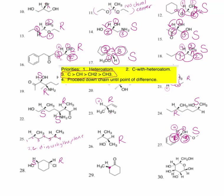For the third asymmetric center of number twenty-eight: hydrogen is number four. This is a carbon with no hydrogens, and this one has two of them. So we say this side is priority number one, two on the other side, and three is the methyl group. We rotate clockwise. That makes this an R configuration.